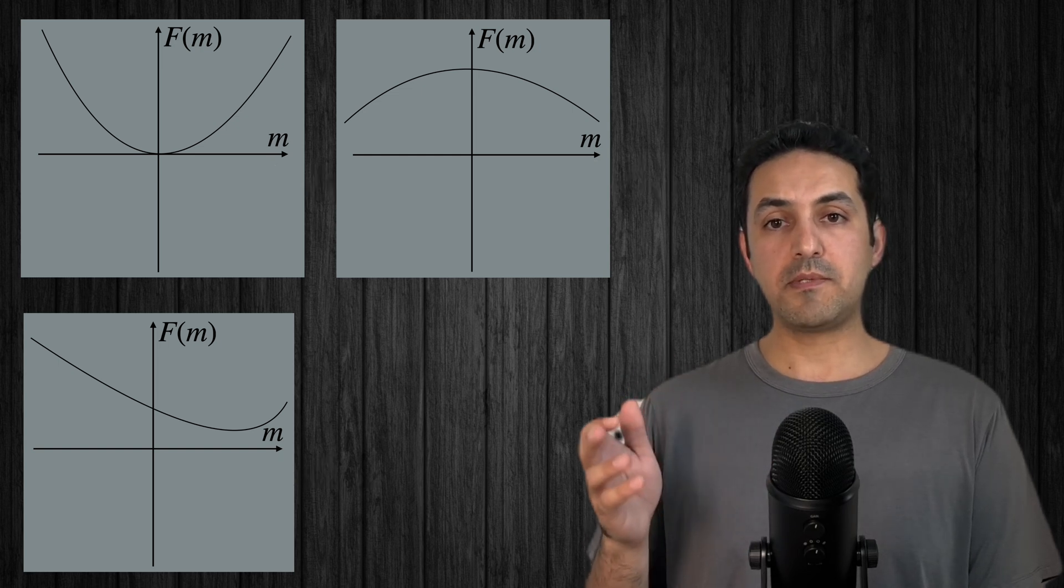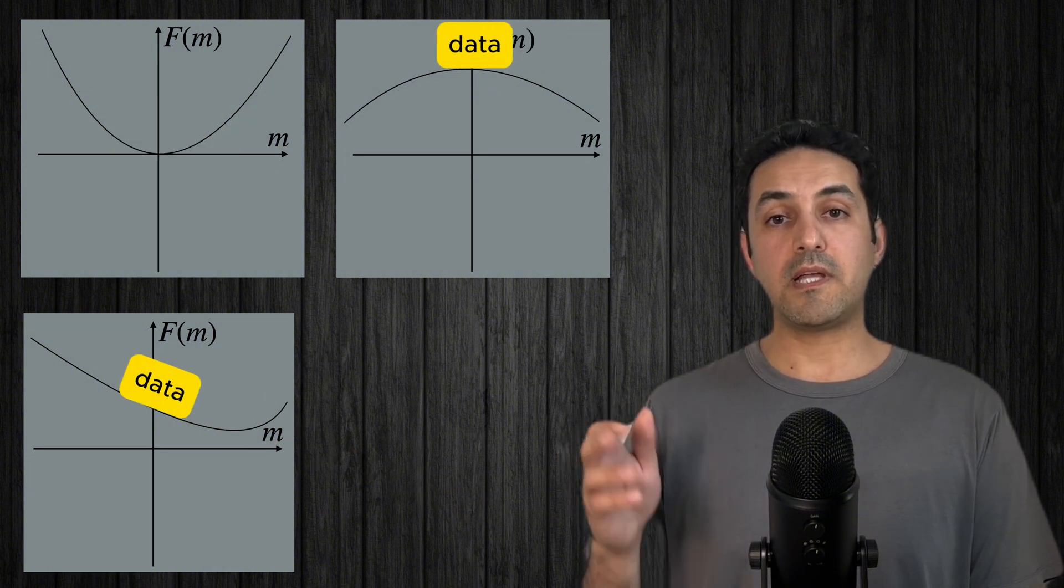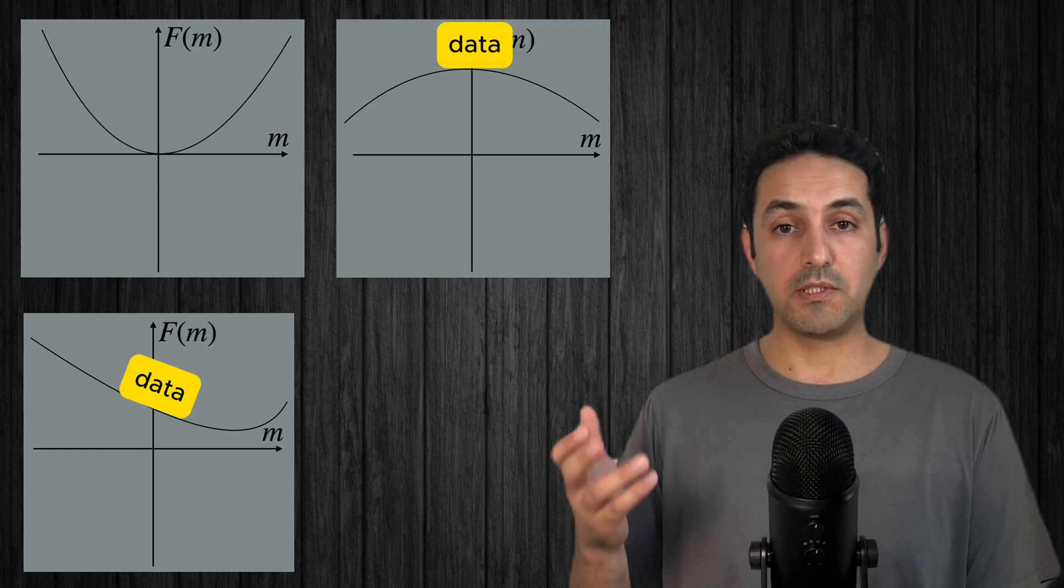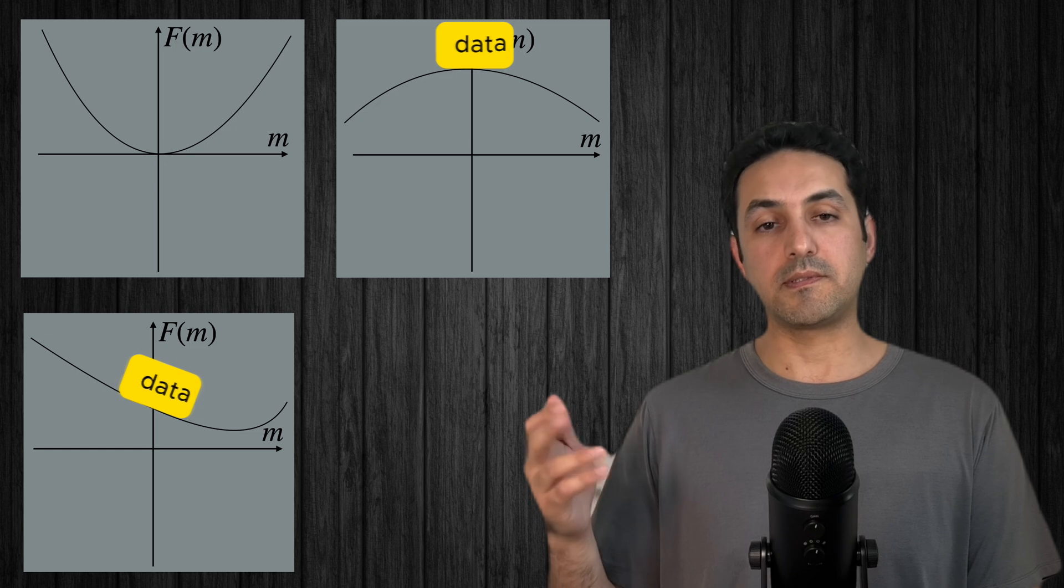If as I assumed, the system is stable, the minimum of the plot must be where the mean of the variable is. If the plot doesn't have a minimum or its minimum is not at the mean of my spreadsheet data, my stability assumption was not correct and the system is not stable.